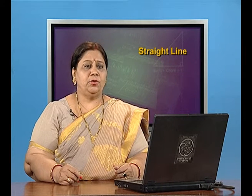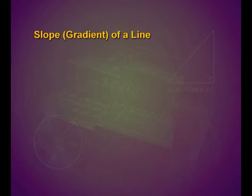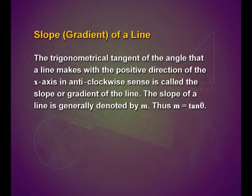Let us look into the slope of a line, which is also known as the gradient of a line. The trigonometrical tangent of the angle that a line makes with the positive direction of the x-axis in the anti-clockwise sense is called the slope or gradient of the line. The slope is generally denoted by m, thus m is equal to tan theta.